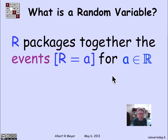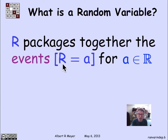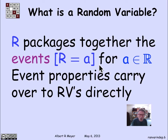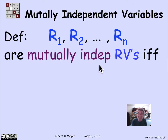Abstractly, what the random variable is doing is packaging together in one object r — the random variable — a whole bunch of events defined by the value that r takes. For every possible real number a, the event that r equals a is an interesting event. If you knew the answer to all of these 'r equals a' events, you'd really know a lot about r. With this understanding, a lot of event properties carry right over to random variables. That's why this topic of introducing random variables is also about independence — because the definition of independence carries right over.